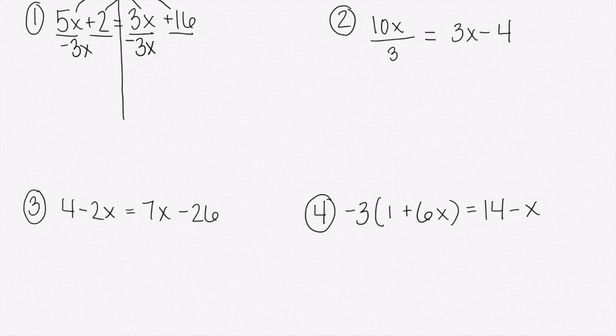Remember that 3x can't go with the 2 because they're not like terms. So 5x minus 3x, I'd be left with 2x. And then I still have that plus 2 there equals 3x minus 3x, which would just be 0. Those would cancel out. And I'm just left with that 16 on the right side.